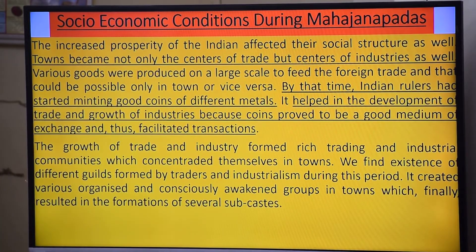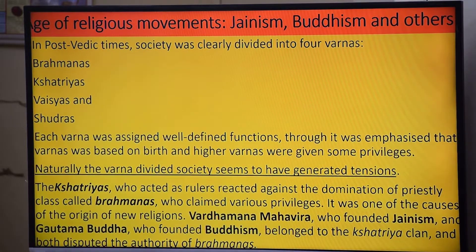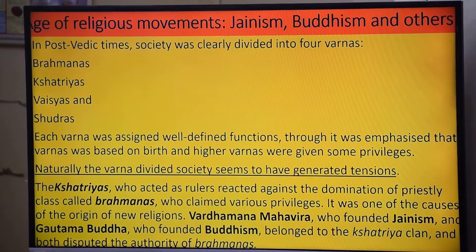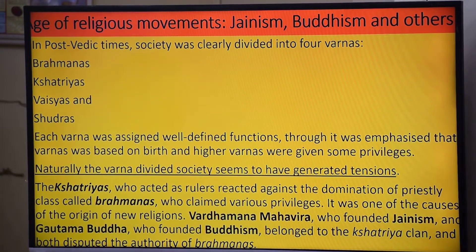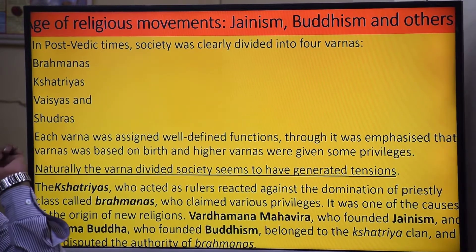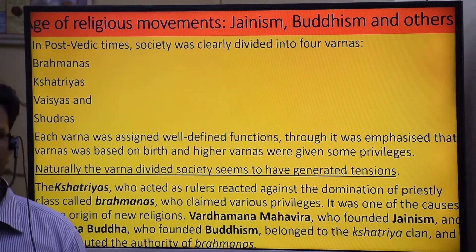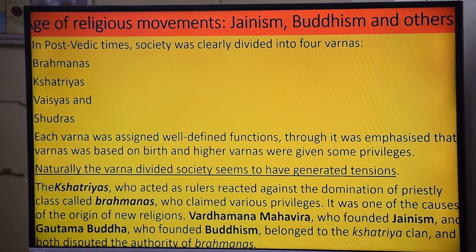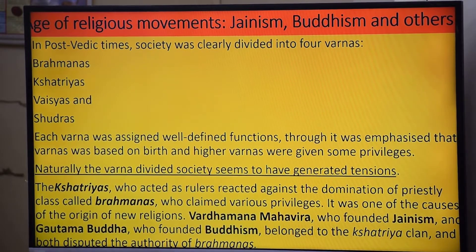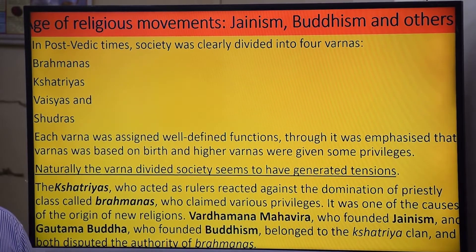In post-Vedic times, society was clearly divided into four varnas. In the latter Vedic age, division had started but was not yet in a clear-cut form. In the post-Vedic period, a clear-cut division of varnas slowly came into existence — in the latter Vedic age it was vague, but in the post-Vedic period it became a defined four-varna system.